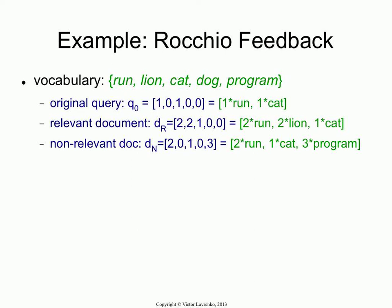Here's an example of how the algorithm would work, and this is a toy example — I'm not actually going to spend very much time on this. So I have a five-word vocabulary: run, lion, cat, dog, program. And my query was two words, run and cat. So in vector representation, you get 1, 0, 1, 0, 0.